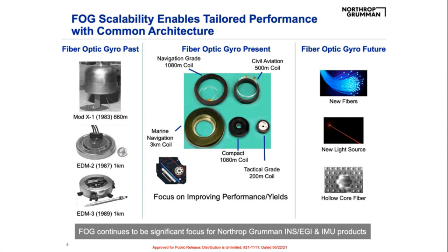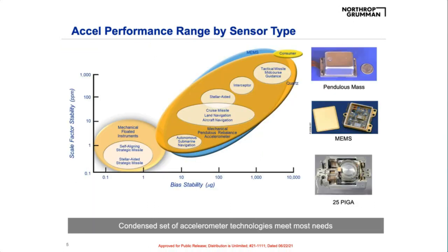Looking ahead, Northrop is developing lower TRL technologies both internally and through sponsored university research, experimenting with new fibers including hollow-core fibers and new light sources. There's much more to learn before we fully exploit the potential of FOGs. Accelerometers by comparison are much simpler — the market is well served by tactical grade, navigation grade, and strategic grade accelerometers, many available commercially.